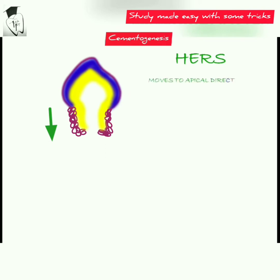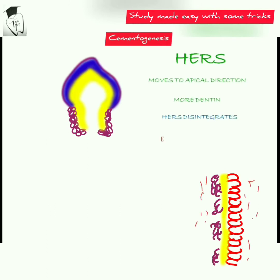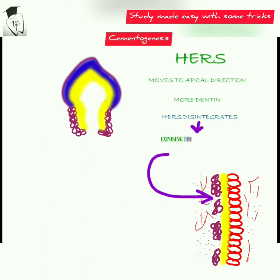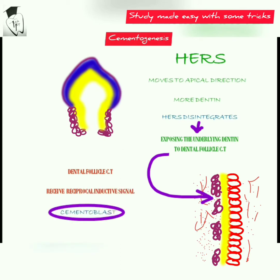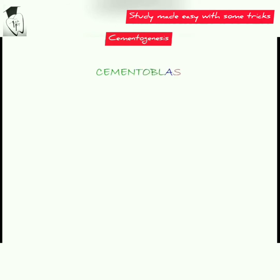Next, the Hertwig's epithelial root sheath moves in the apical direction and gives rise to more dentine, then it disintegrates and the dental follicle connective tissue comes in contact with the underlying dentine. The dental follicle connective tissue, under the influence of either the Hertwig's epithelial root sheath or the underlying dentine, will differentiate into the cementoblast, which will lay the cemento matrix.